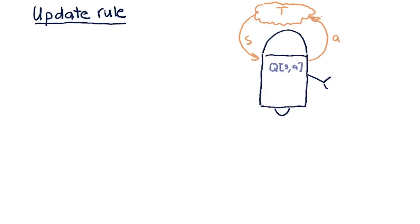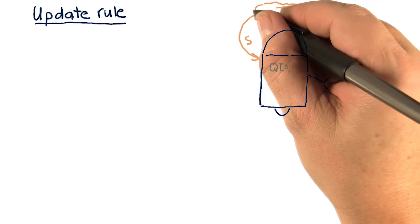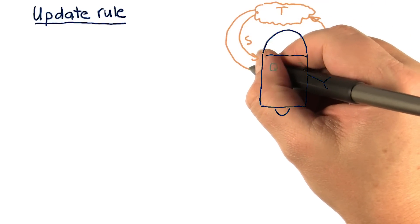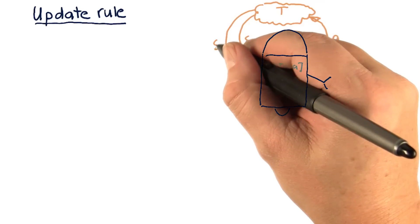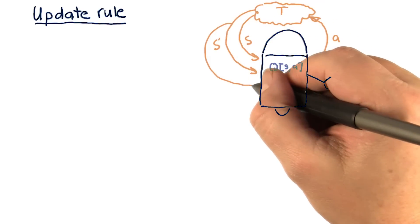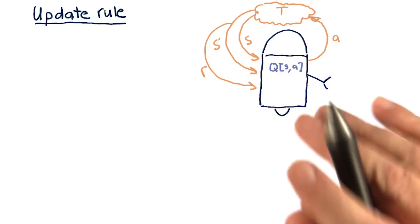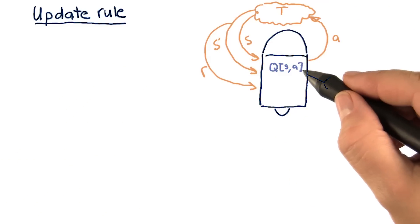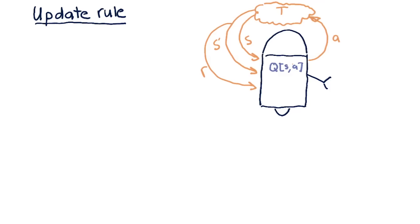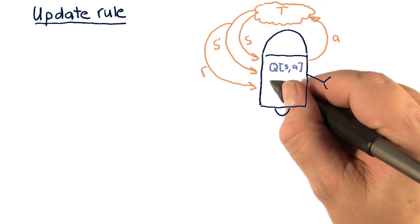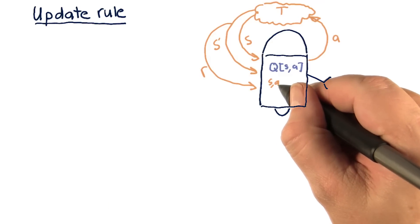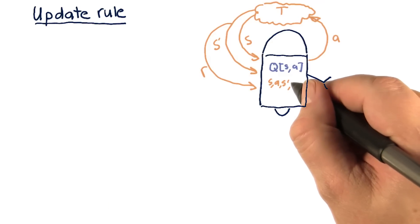Once that action is taken, that results in two new things. One is a new state, we call that S prime, and a reward. All that information comes into the robot, and it needs to use that information to update its Q table. So as a consequence of this interaction with the world, it's got an S, an A, an S prime, and an R.